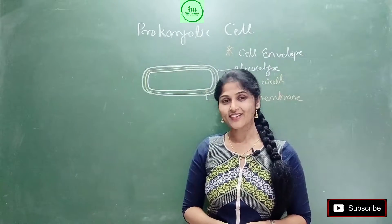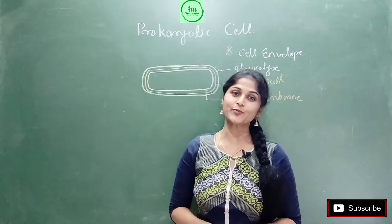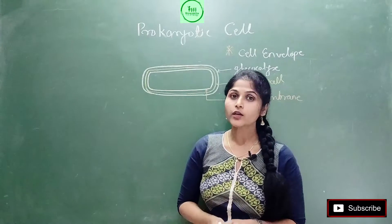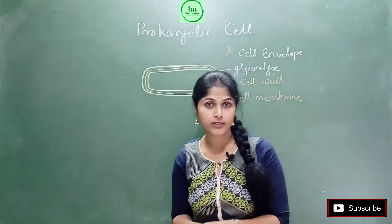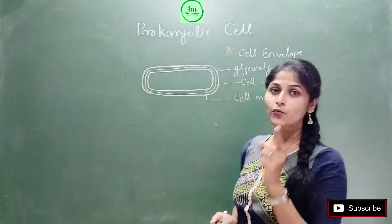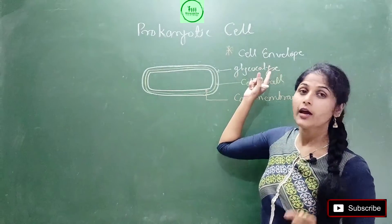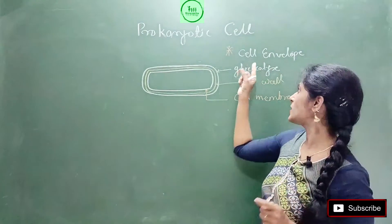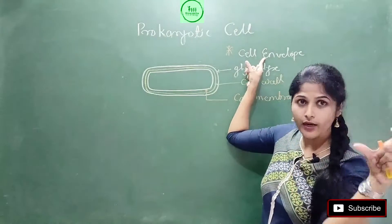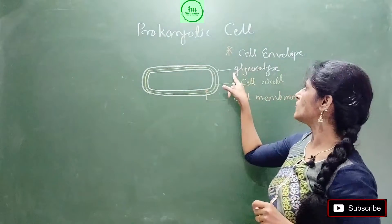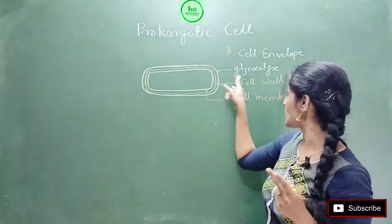Hello everyone, welcome to the channel. I'm Asmita ma'am, and today we're going to continue about prokaryotic cells. In the previous video we covered the cell envelope, and there you learned that the bacterial cell envelope is a protective layer made up of glycocalyx, inside glycocalyx there is a cell wall, and inside that is the cell membrane.